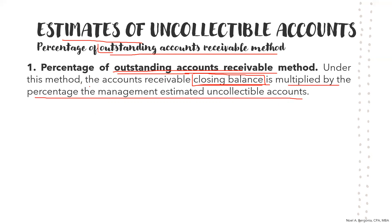Where does the percentage come from? In problems it will be given, but in reality it is based on the company's experience and policy. The final say is in their policy — management determines the percentage, such as 1% or 2% of the outstanding receivable balance. There is no specific required percentage; it depends on the company's level of confidence in collections and their experience. When you multiply the closing balance by the percentage, that gives you the required ending balance of the allowance account.